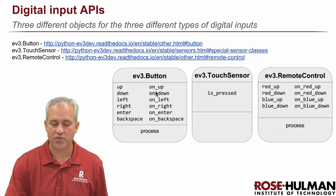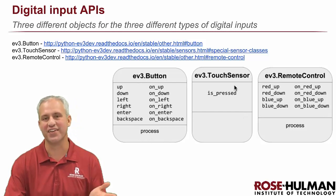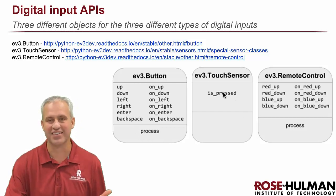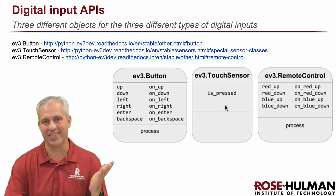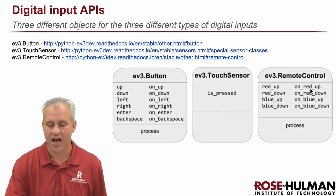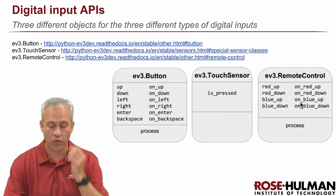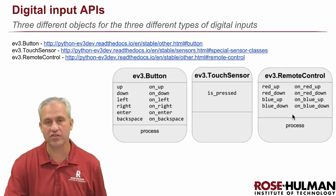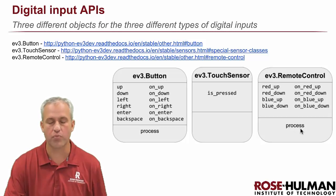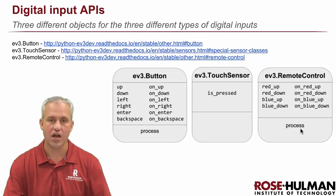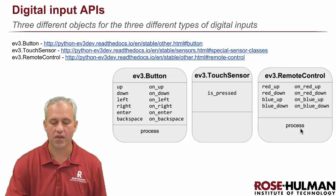Here are the UML diagrams for these things. You can see that buttons have many instance variables and only one method. TouchSensor is my favorite class — it's got one instance variable and no methods. What an awesome class. Remote control is very similar to button. We'll talk about each of these instance variables and the process method when we get into each one.